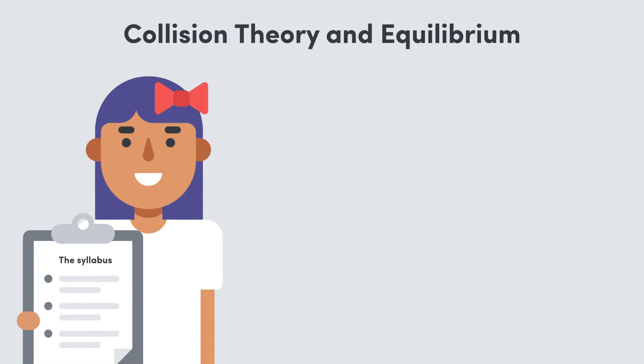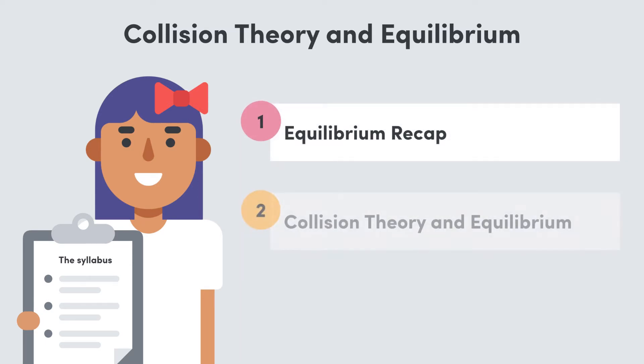The relevant dot points for this stuff can be found on the video page. And to cover this we'll start by recapping what an equilibrium is. Then we're going to use collision theory to explain the observations we make about our system as it approaches equilibrium.